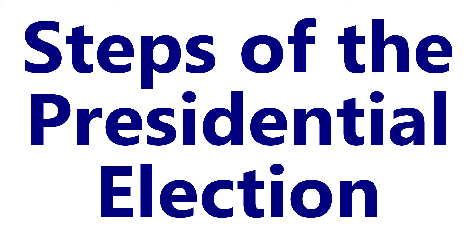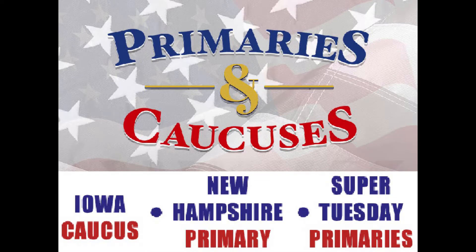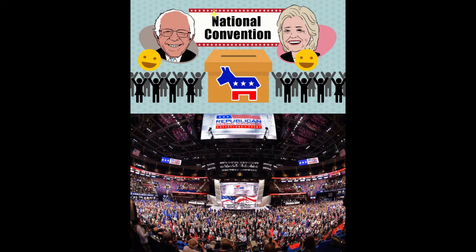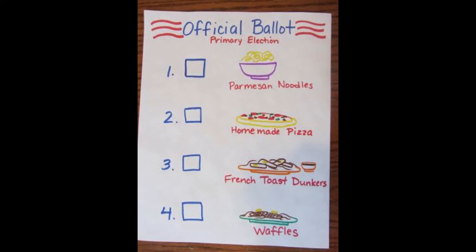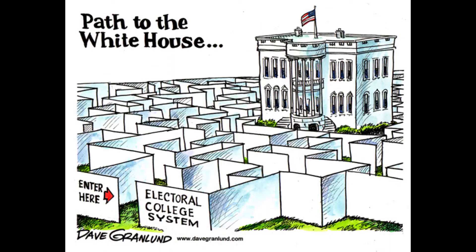The steps for the presidential election in the United States go something like this: first, the primaries and caucuses; then the party convention; then in November the election itself; and finally the electoral college.